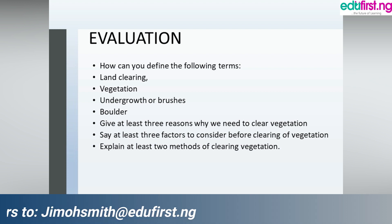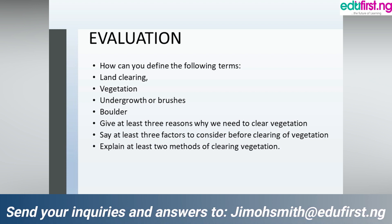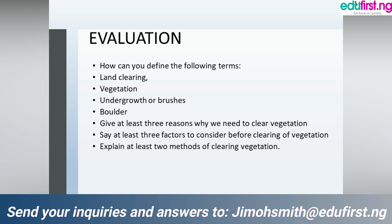Number one, how can you define the following terms: land clearing, vegetation, undergrowth or brushes, and boulder? Number two, give at least three reasons why we need to clear vegetation. Number three, say at least three factors to consider before clearing of vegetation. Number four, explain at least two methods of clearing vegetation. Thanks for listening.